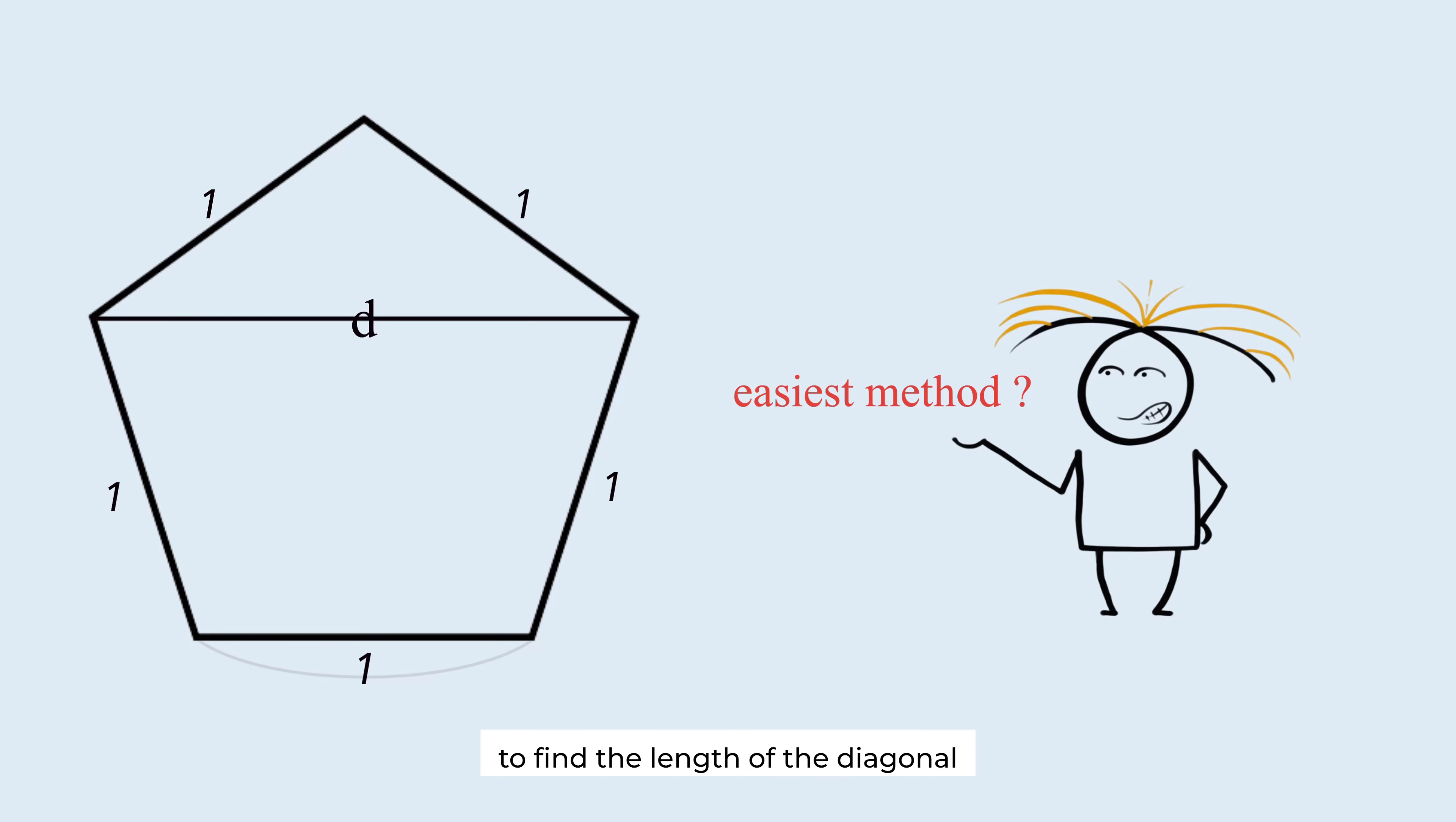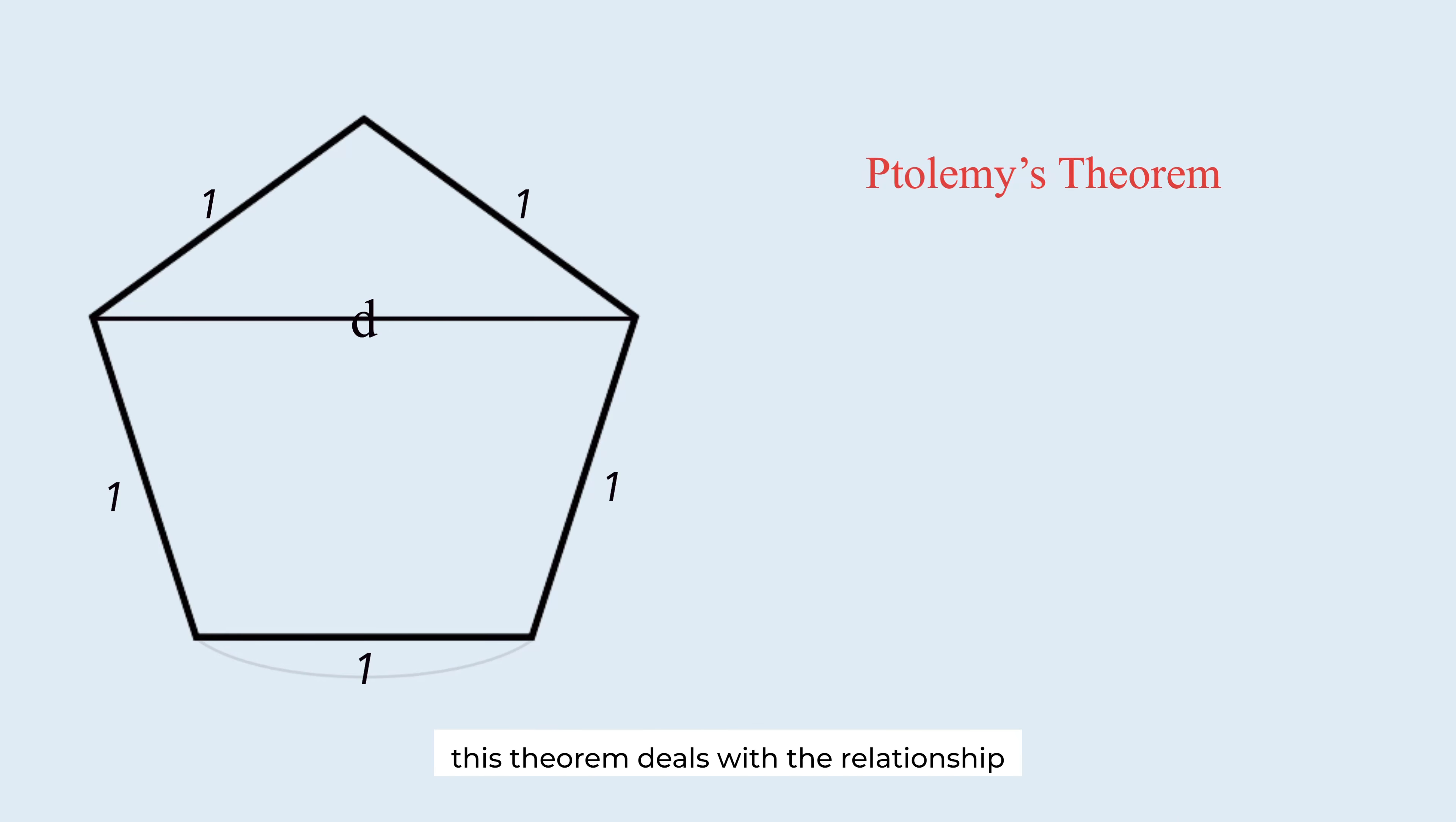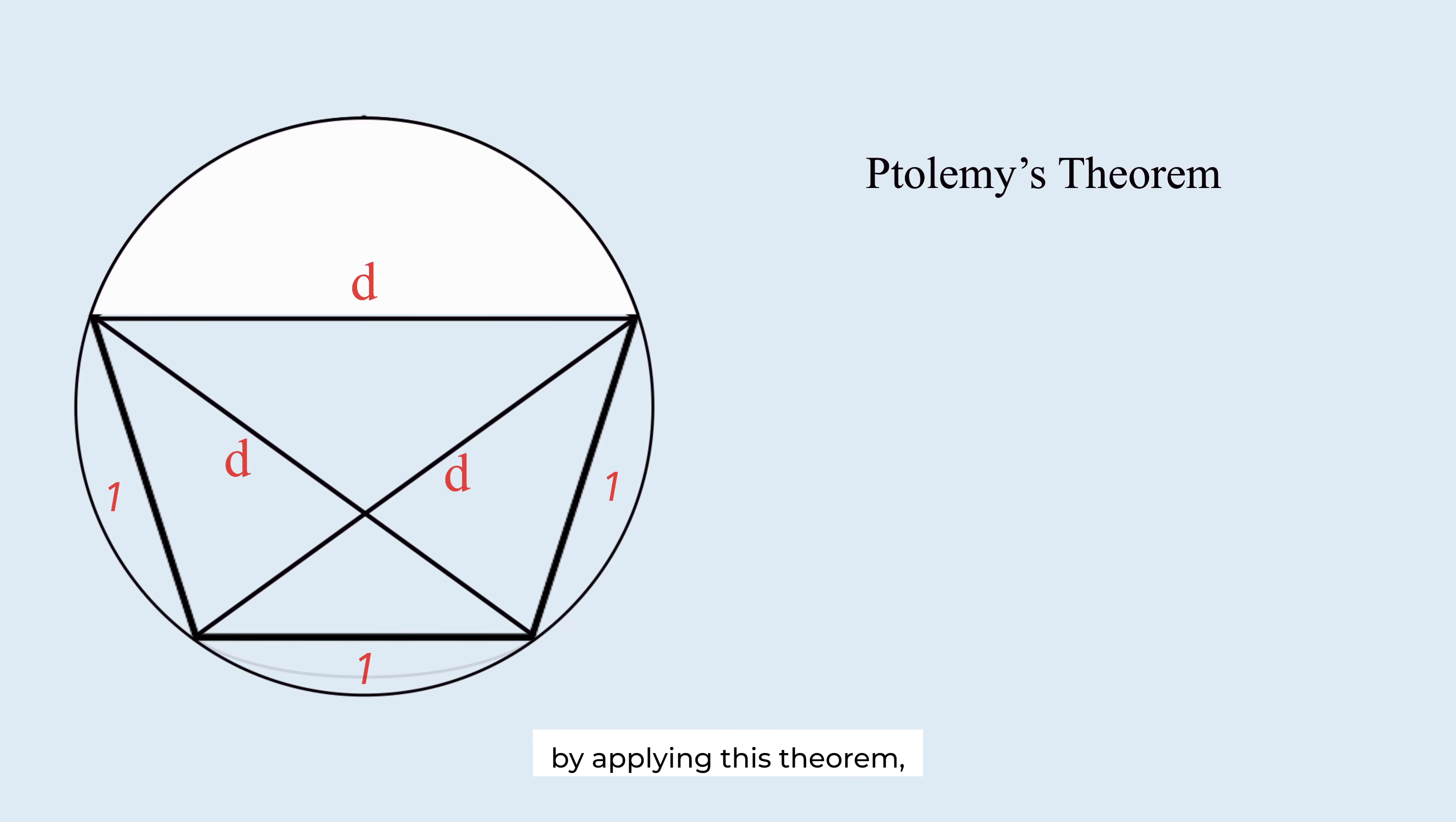The easiest method to find the length of the diagonal is Ptolemy's theorem. This theorem deals with the relationship between the lengths of the chords inscribed in a circle. By applying this theorem, we get this equation. When we solve this quadratic equation, we find the value of D.